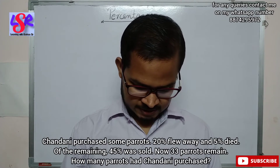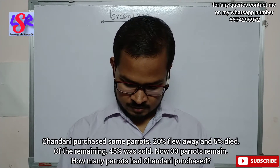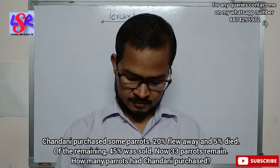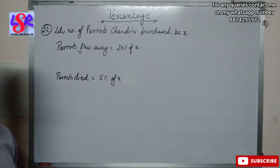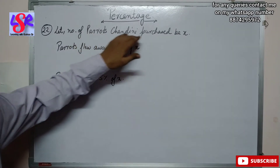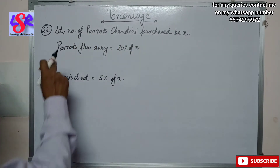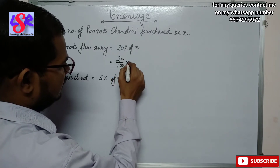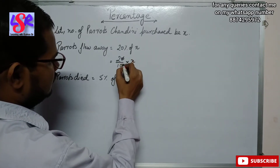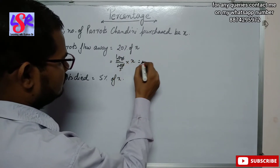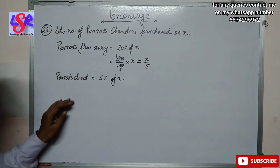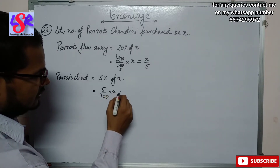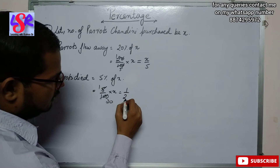Now we will move to question number 22. Here we are having: Chandni purchased some parrots. 20 percent flew away and 5 percent died. Of the remaining, 45 percent was sold. Now 33 parrots remain. How many parrots did Chandni purchase? Let the number of parrots Chandni purchased be x. The parrots which flew away is 20 percent of x, that is 20 upon 100 into x, which equals x upon 5. The number of parrots that died equals 5 percent of x, that is 5 upon 100 into x, which equals 1 upon 20 x.